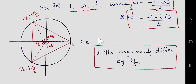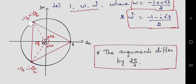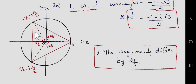Now let us see the diagrammatic representation of the cube roots of unity. All nth roots lie on the circumference of the unit circle. The first root is 1. The second root, −1/2 + i·(√3/2), is in the second quadrant. The third root is the conjugate — the mirror image — of the second one: −1/2 − i·(√3/2). If we join all three roots, we get an equilateral triangle.